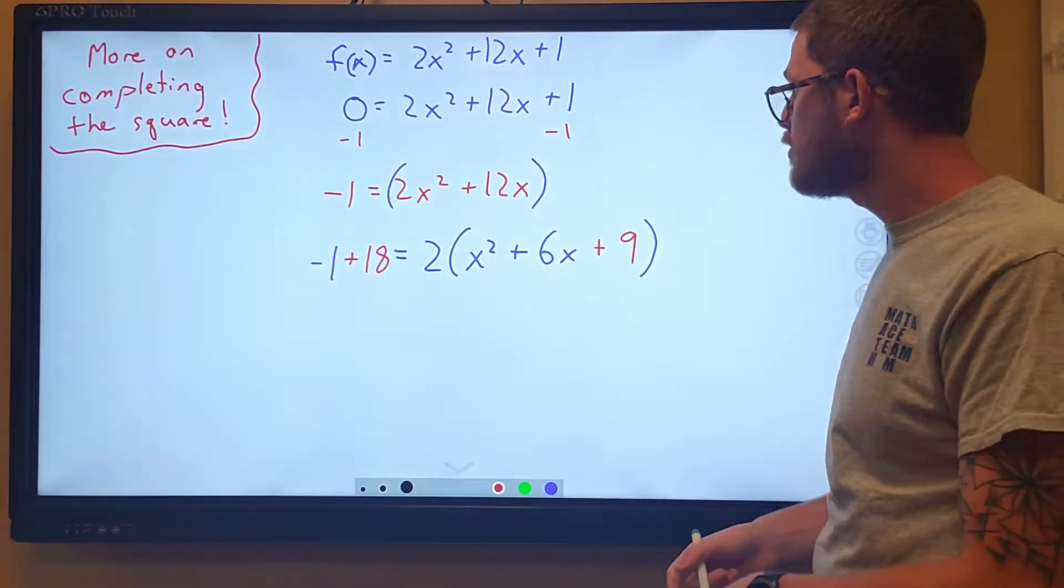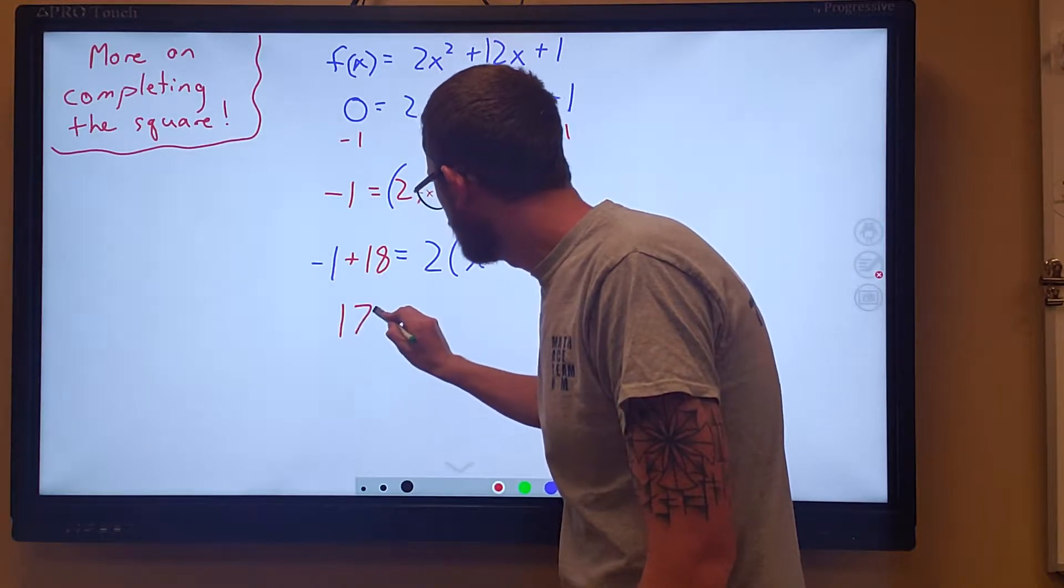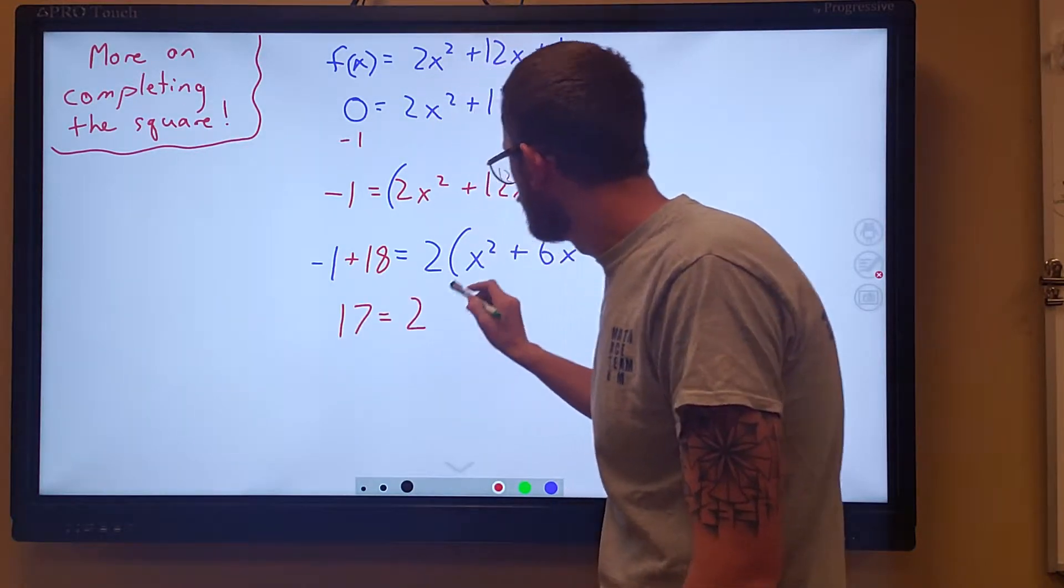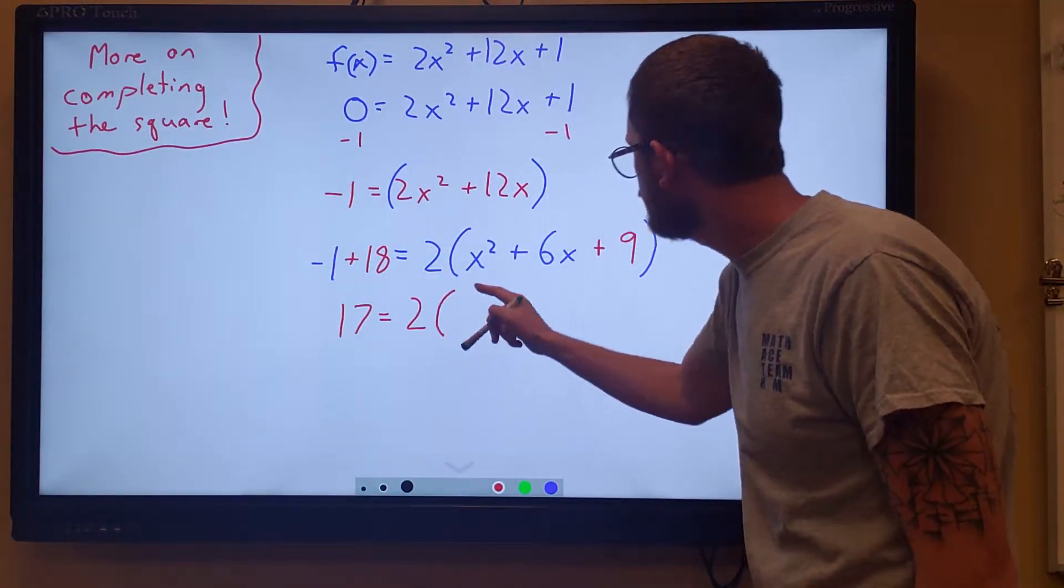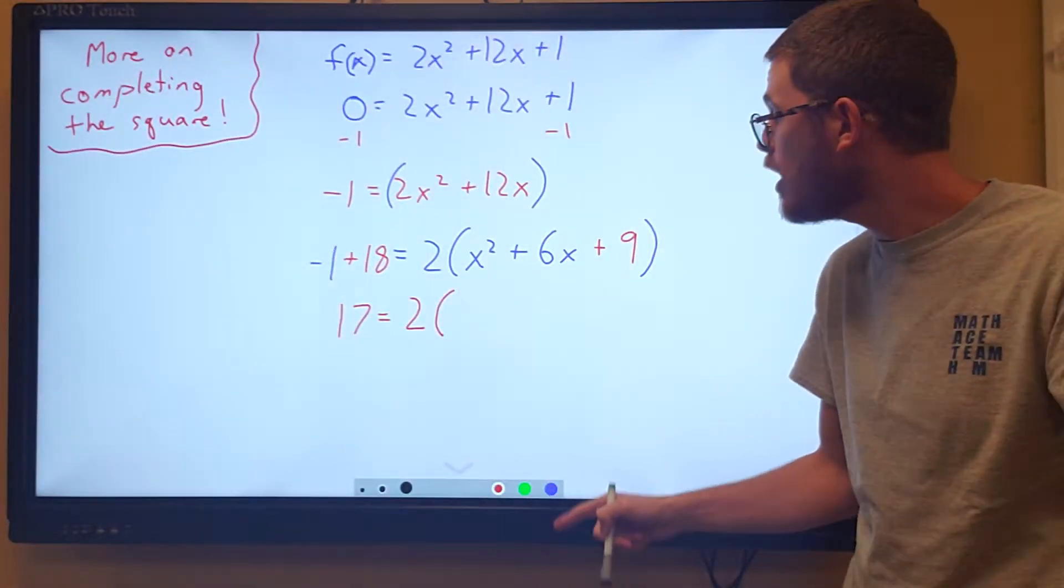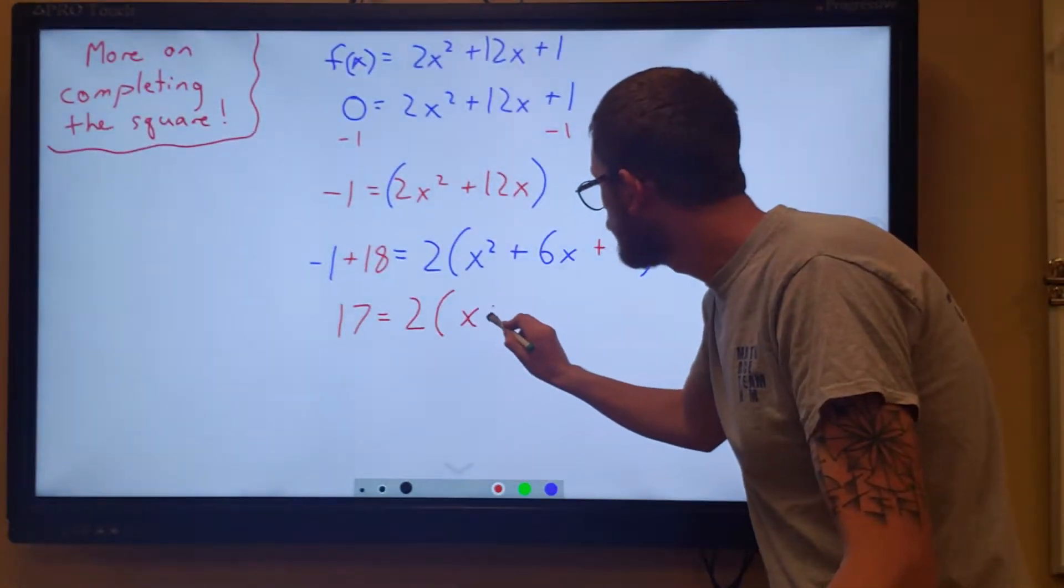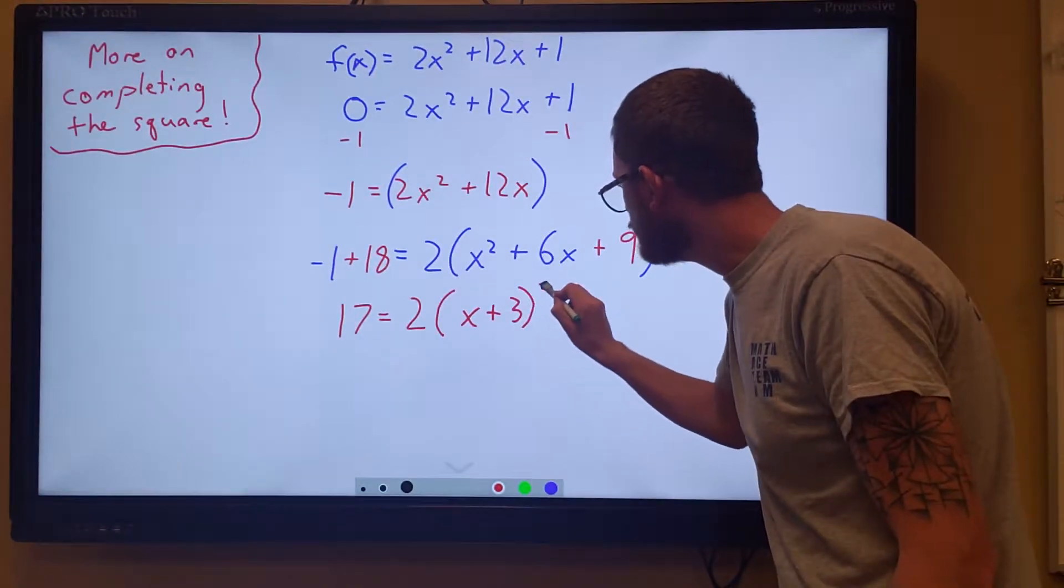Now we simplify just like we've done before. That is 17. There's a 2 outside of the set of parentheses. This set of parentheses is a perfect square. This is x plus 3 squared.